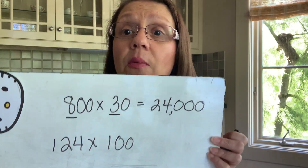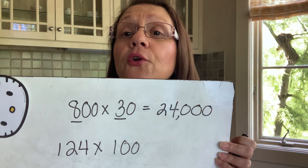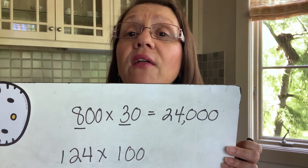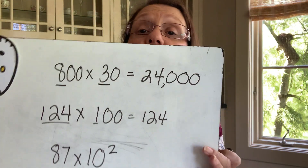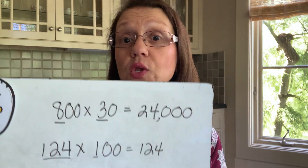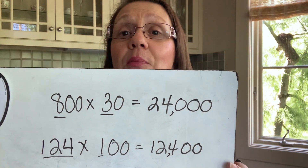Let's try another one. How about 124 times 100? The math fact here is 1 times 124, which is 124. Underline that. How many zeros do I have? I have two zeros. So I put two zeros after my 124, add in my comma if I need it, and I have my product.